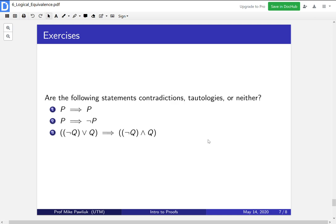As an exercise for you, which of the following statements are contradictions, which of them are tautologies, and which of them are neither? So P implies Q, P implies not P, and Q.